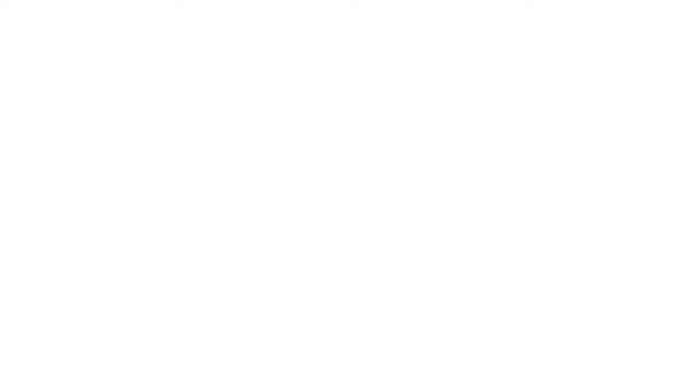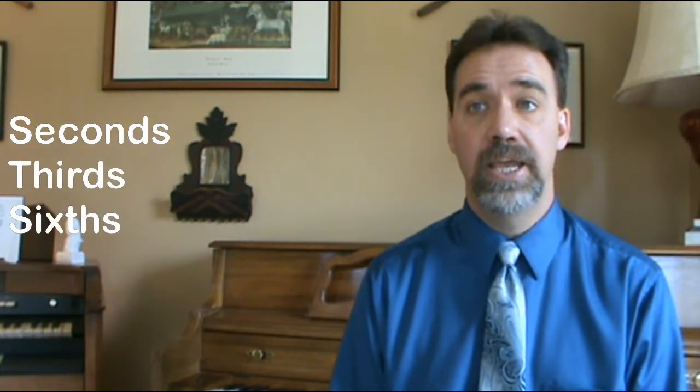For example, you'll hear minor third or perfect fifth — those tell the specific sizes of the thirds and fifths we encounter. Interval qualities fall under two different systems. For intervals that can be labeled minor or major, from narrowest to widest we can have diminished, minor, major, or augmented — this system applies to seconds, thirds, sixths, and sevenths.